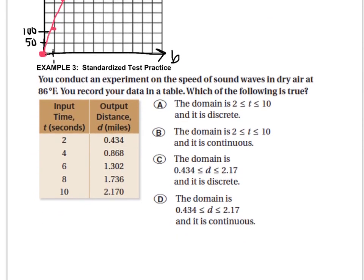You conduct an experiment on the speed of sound waves in dry air at 86 degrees Fahrenheit. You record your data in a table. Which of the following is true? Well, the question asks what the domain is. Remember, the domain is all the x values or the input values. So the domain is this, and these would be the range values. So it's down between A and B.